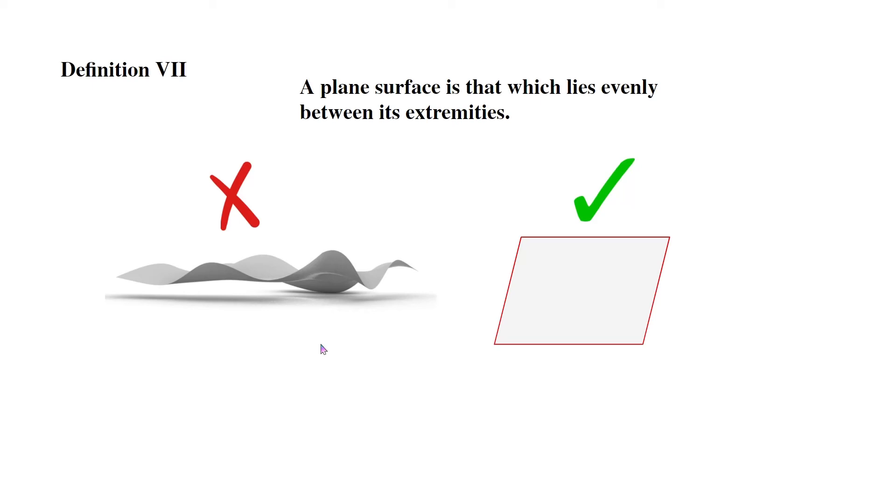So over here we have a parallelogram. This is a plane surface because it lies evenly between its extremities, it's even. But this is not, because it's wavy, it's like an ocean, it's waves. It doesn't lie evenly between its extremities.